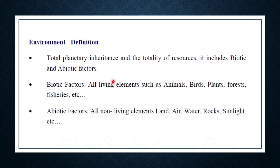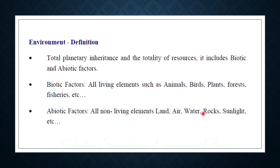In the next chapter, the topic is the environment. The environment includes biotic factors such as animals, birds, plants, forests, and fisheries, and abiotic factors such as land, air, water, rocks, and sunlight.